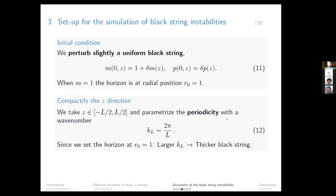We compactify the z direction, making it finite with length L and periodic. We parameterize this periodicity with the wave number k_L equal to 2π over L. When k_L is larger, the string is shorter and therefore thicker. For the numerical simulation we choose specific forms of the perturbation and try several different ones to check robustness of the results.